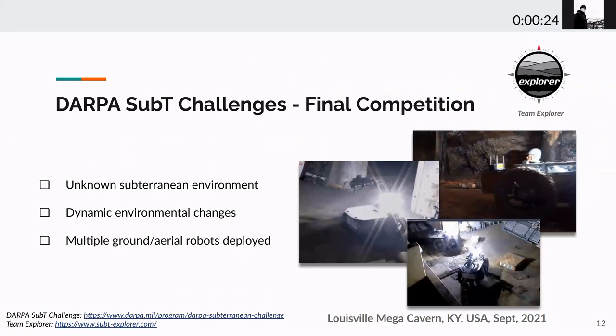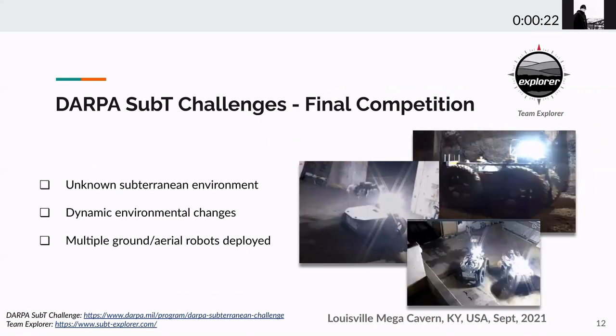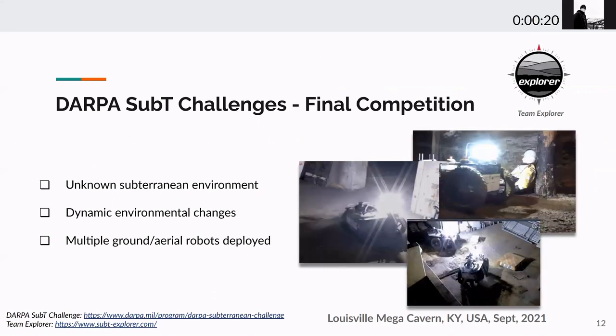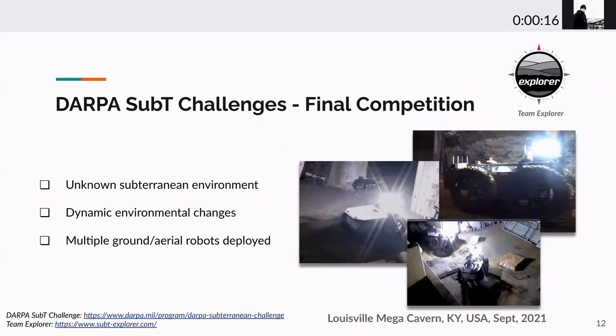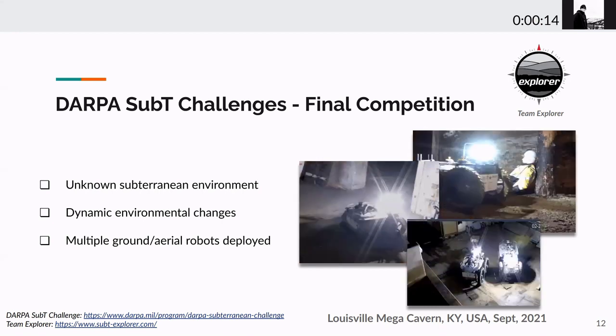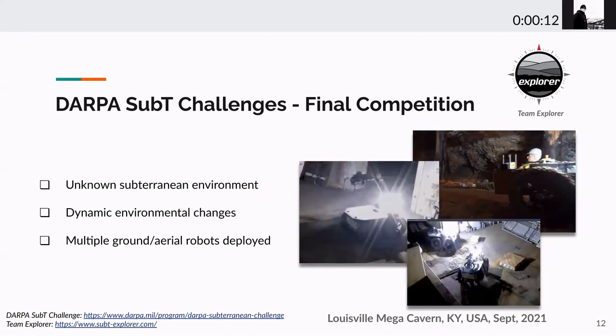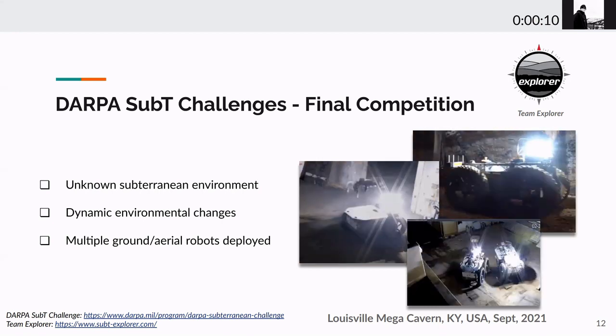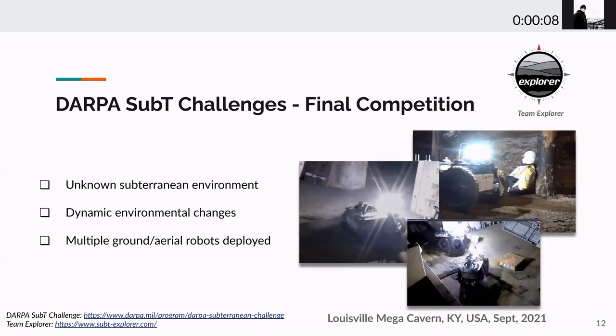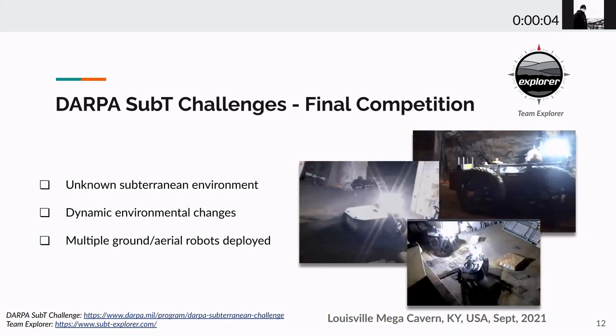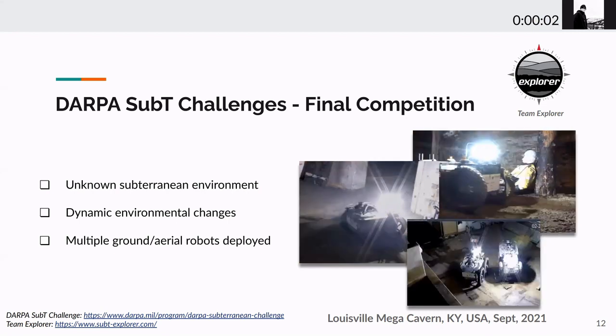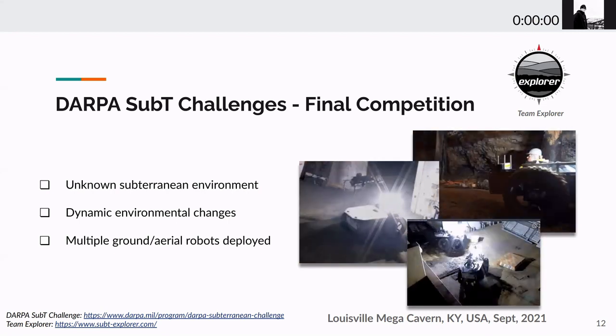Additionally, FAR planner was used by CMU OSU team attending DARPA subterranean challenge. The final competition was held in the Louisville Mega Cave in Kentucky 2021. We deployed multi-ground and air robots. Despite the unknown subterranean environment, DARPA also introduced dynamic environment changes, like opening and closing doors, to make the final competition even more challenging.